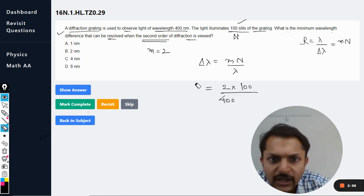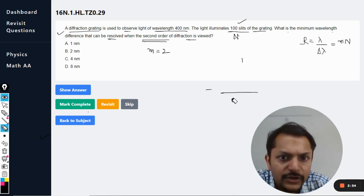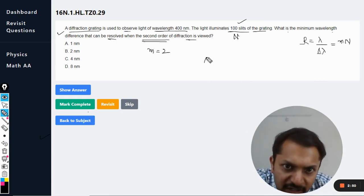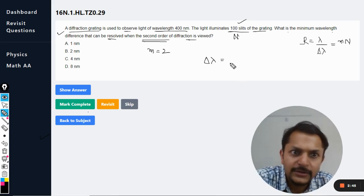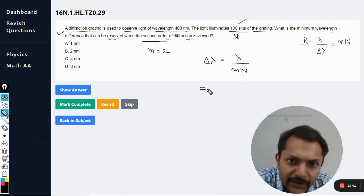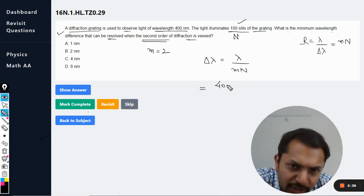Oh sorry, this was the reciprocal. I would have written - my mistake. So delta lambda is... M, again the same mistake. Okay, so what is lambda? 400 nanometers.